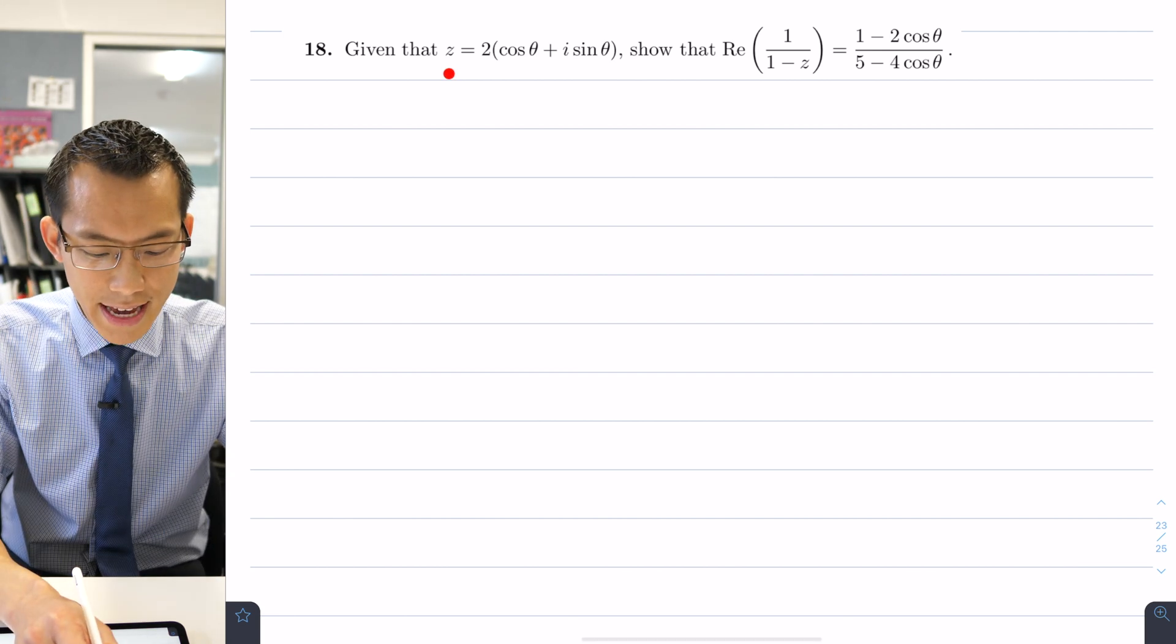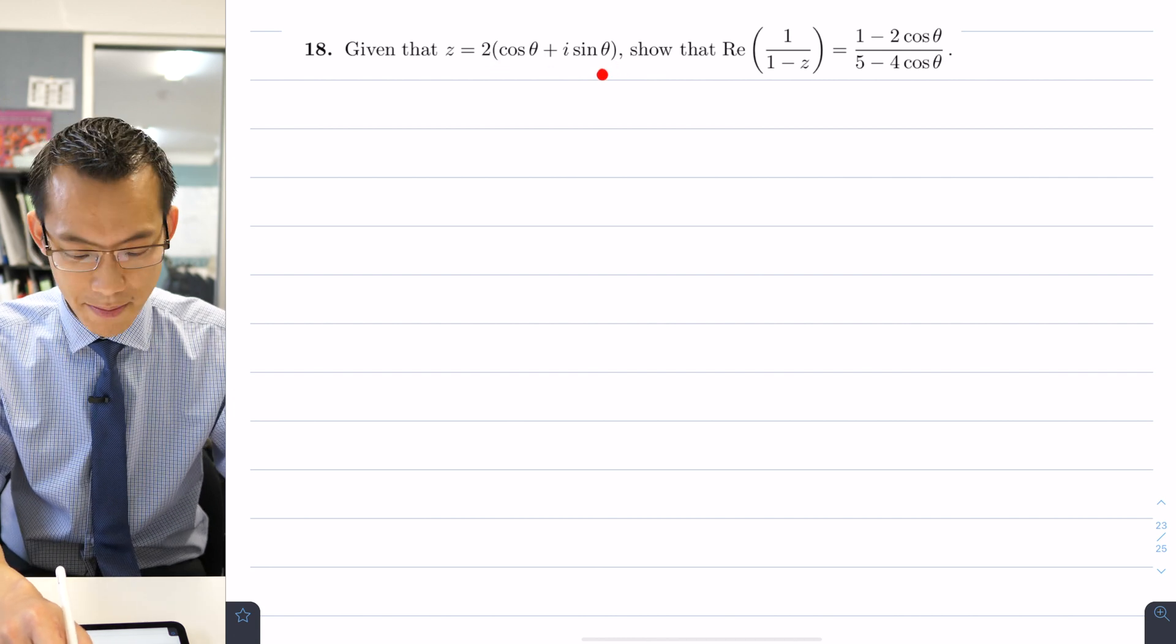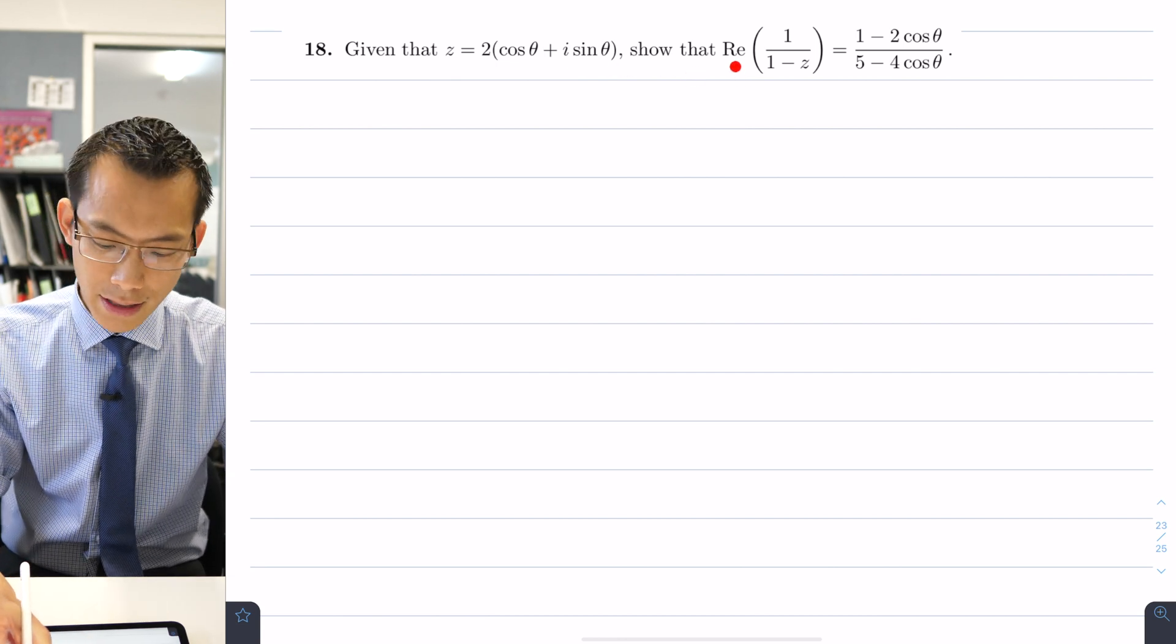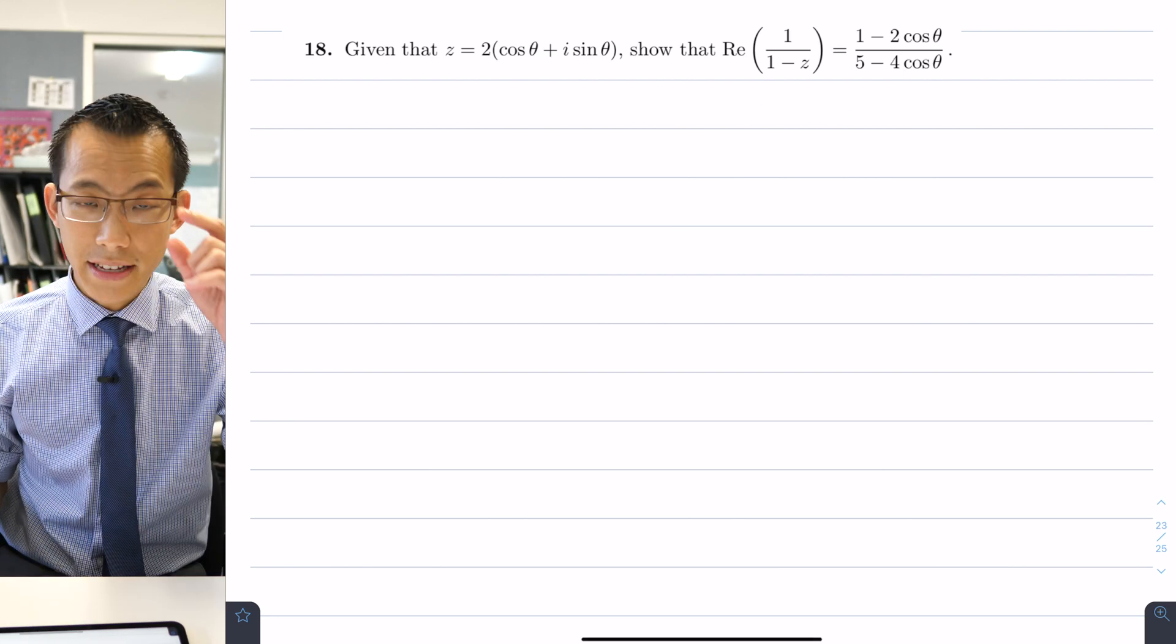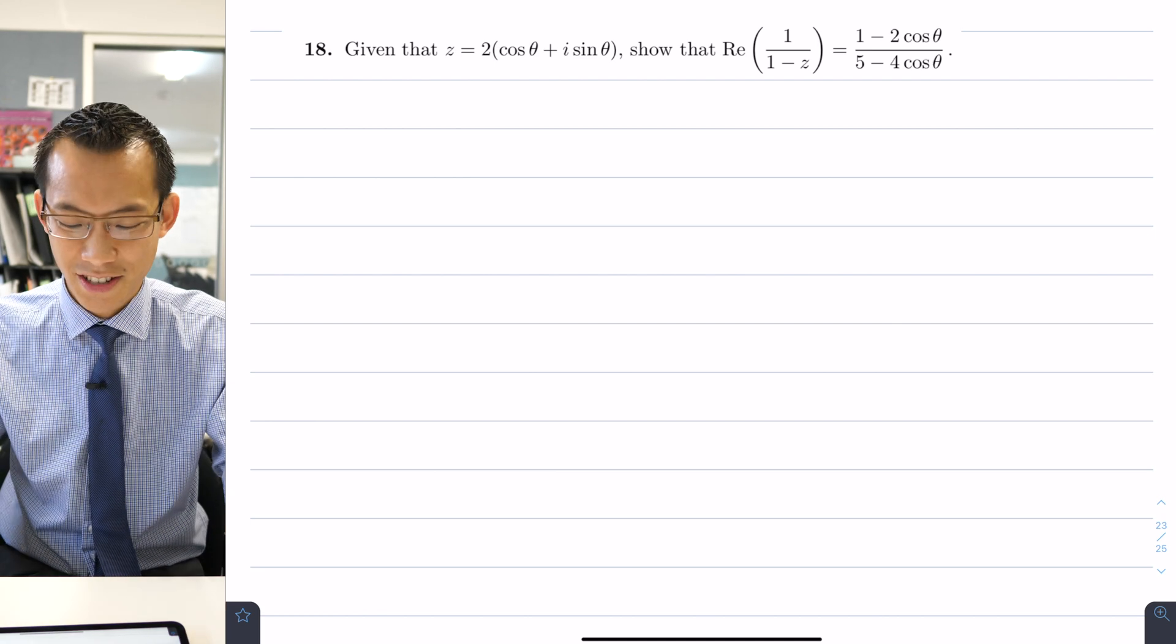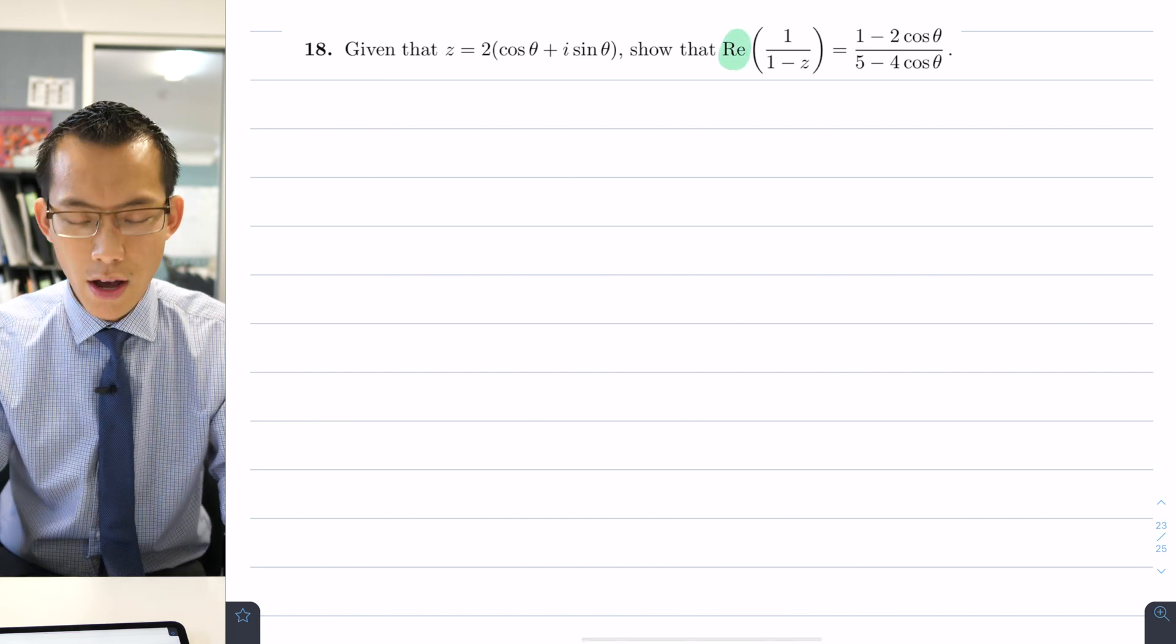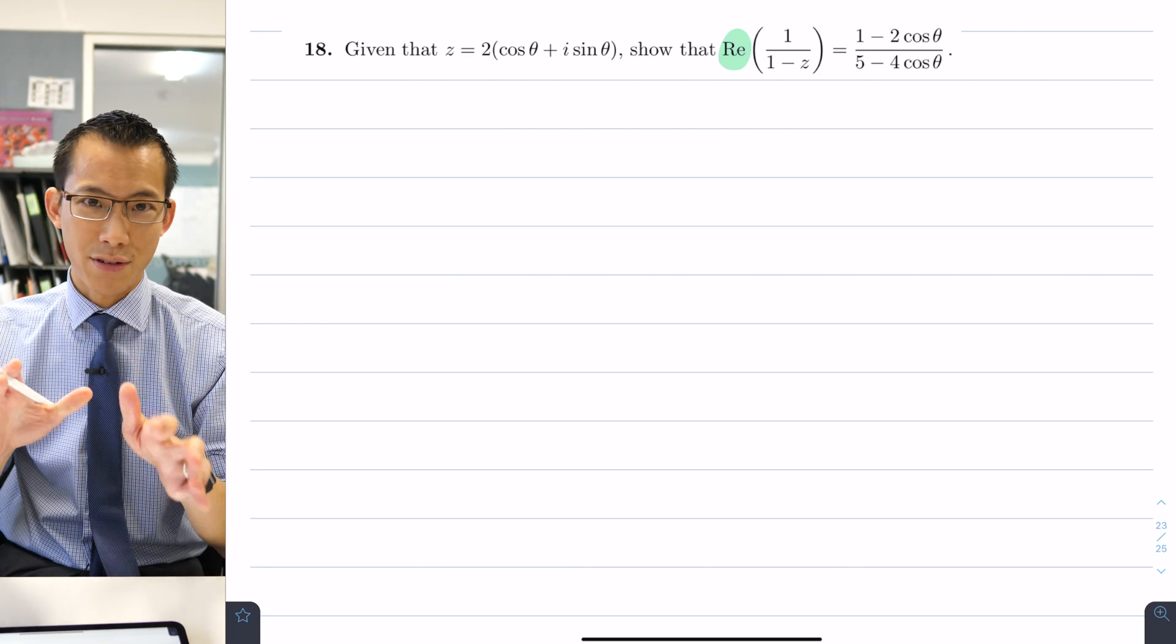Given that z equals this trigonometric mess, which apparently is going to be a complex number—you can see there's a real part here and this is going to be an imaginary part—show that this identity holds. This is somewhat like a trigonometric identity proof. You can see they're also using this newish notation to take the real component of a complex number and just address that part of it.